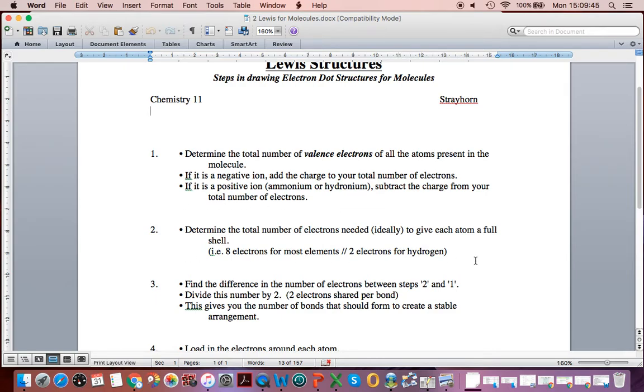Then, the second step was to figure out how many electrons each element in the compound or ion wanted in a perfect world if it could be on its own.